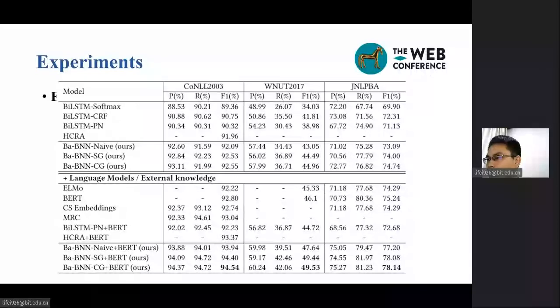Also, we observe that Ba-BNN-CG achieves the best performance when compared with Ba-BNN-Naive and Ba-BNN-SG. It is because the bidirectional decoder in Ba-BNN-CG has fully utilized the contextual information to generate more accurate entity boundaries.